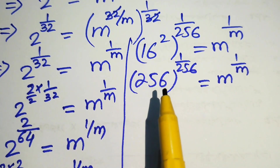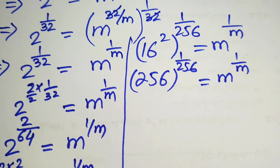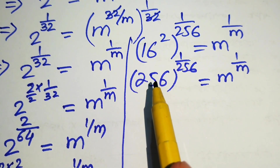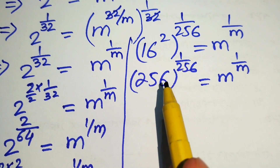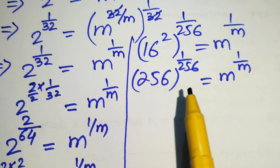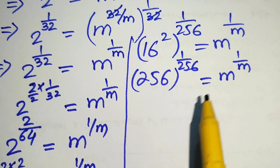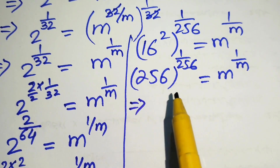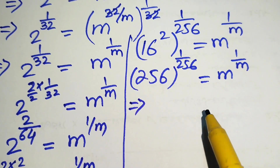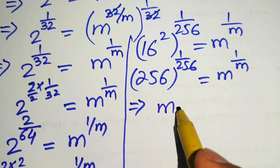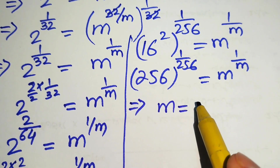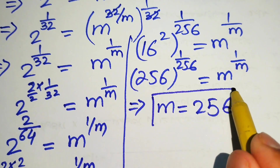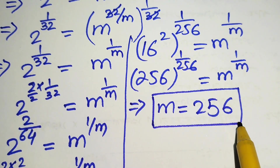Now we have reached our desired form. The base is 256 and its exponent is the reciprocal of its base. Both sides are written in the same form, so when we compare both sides we easily get the value of m equals 256. This is the final answer.